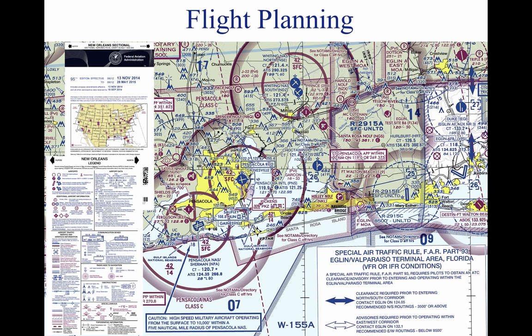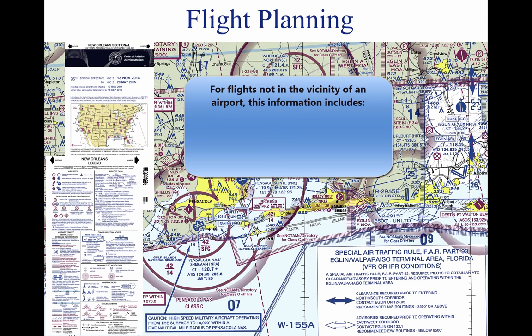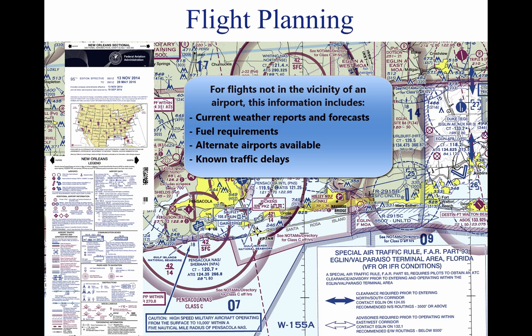Flight Planning. Title 14 of the Code of Federal Regulations Part 91 states, in part, that before beginning a flight, the pilot in command of an aircraft shall become familiar with all available information concerning that flight. For flights not in the vicinity of an airport, this must include information on available current weather reports and forecasts, fuel requirements, alternatives available if the planned flight cannot be completed, and any known traffic delays of which the pilot in command has been advised by ATC.